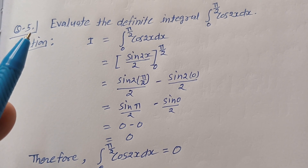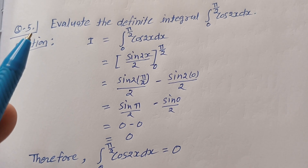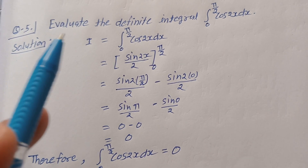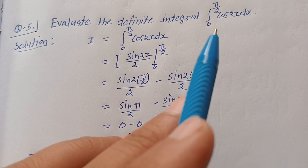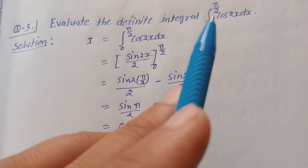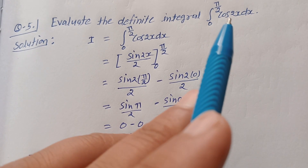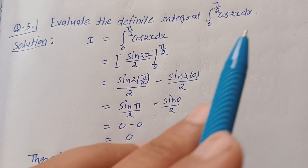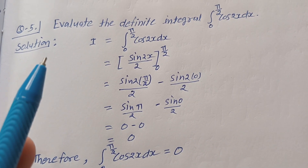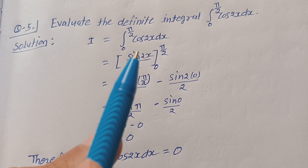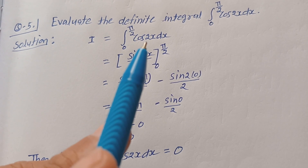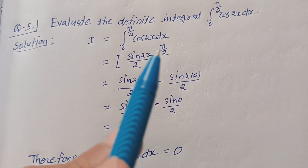We explain equation number 5, exercise 7.9, class 12th: evaluate the definite integral, integration from 0 to π/2 of cos(2x) dx. For the solution, let I equal to integration from 0 to π/2 of cos(2x) dx.